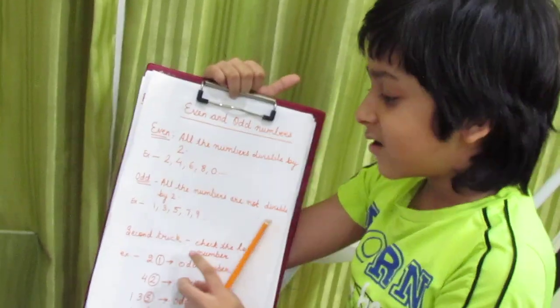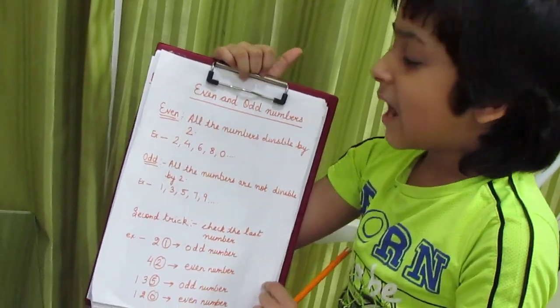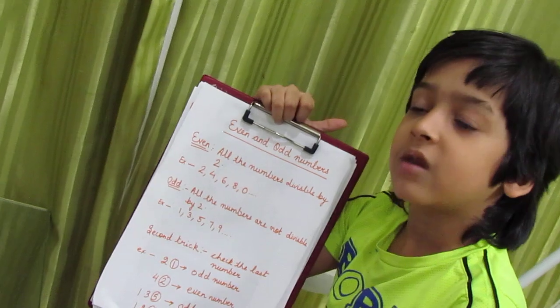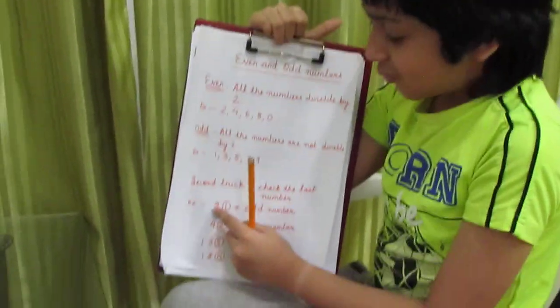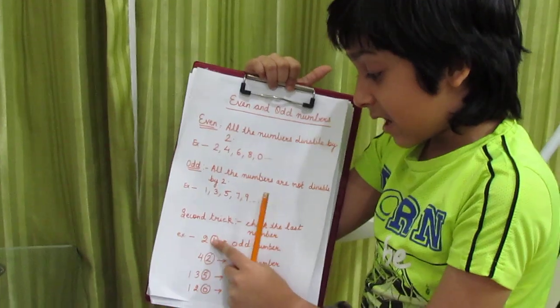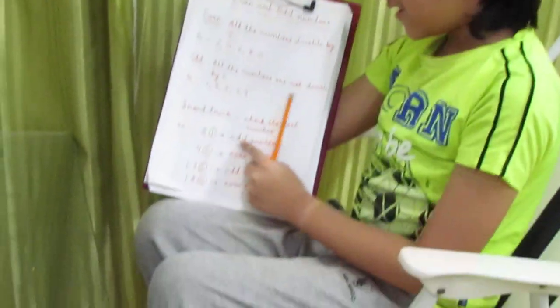Now the second trick to learn is to check the numbers at the last. That means if it is greater than 10, you can check the last number such as 21. See, the last number is 1 and 1 is an odd number.